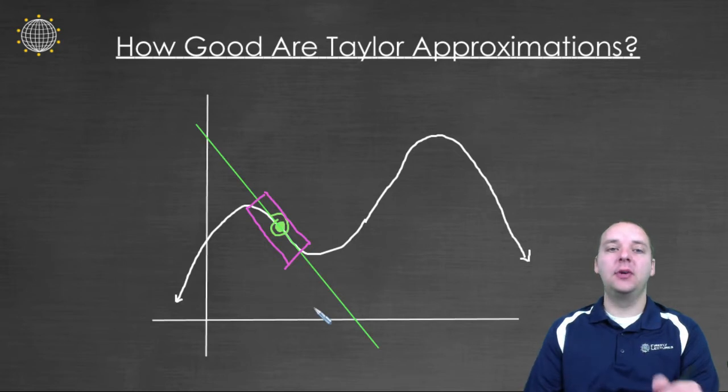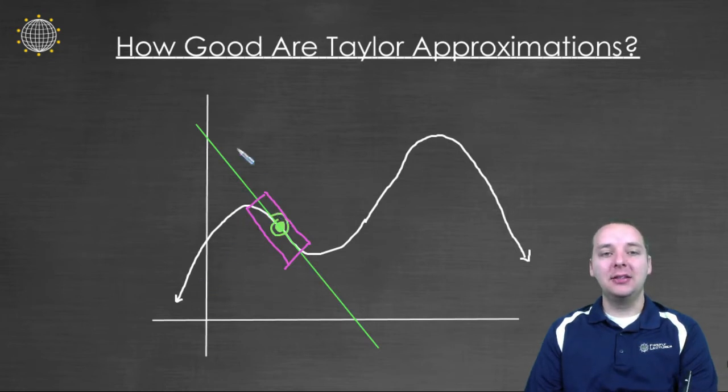But the problem with linear functions is they can't bend. So after a while the curve will turn, but the tangent line keeps going straight. And if you tried to approximate a y value, let's say somewhere back here, it would be a terrible approximation because the curve's y value is here, the linear function's y value is way up here. That's a terrible approximation. So you have to stay very, very close to home. You have to stay very close to c.